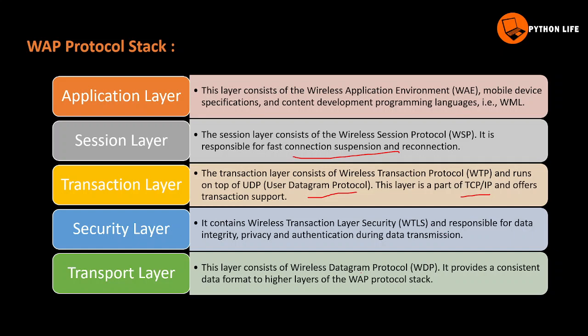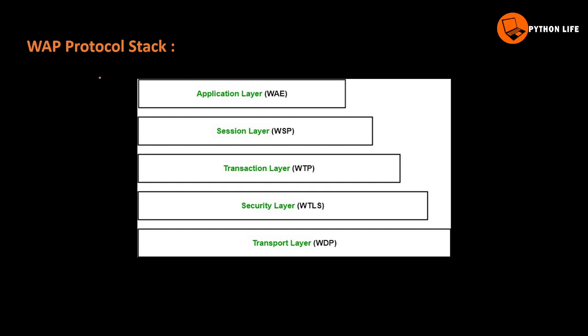The Security layer addresses requirements for data integrity and privacy during data transmission. It provides security, authentication, and prevents unauthorized access. The Transport layer consists of the Wireless Datagram Protocol (WDP), which provides consistent data service to the higher layers of the WAP protocol stack.